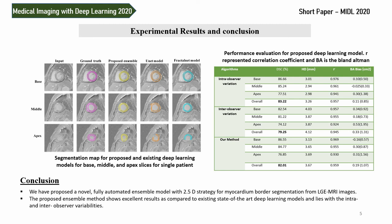As you can see, our proposed ensemble model achieved a better DICE similarity coefficient as compared to other state-of-the-art deep learning models such as U-Net and FLECTANET, as you can see in the output feature maps in this figure.